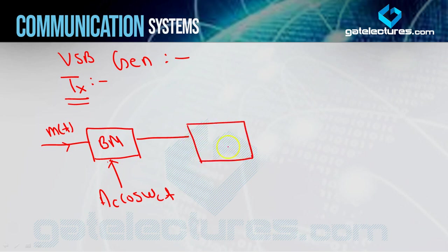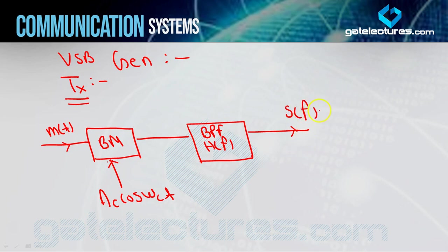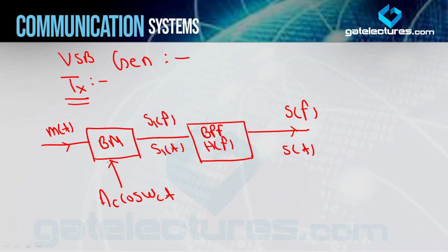Now, hum log kya use karte hain? Phir ek band pass filter, jisski characteristics main le raha hoon yahan par HF. Now, hum log ko generate kya karna hota hai yahan par - SSBSC. Par aap dekhenge ki aapne yahan filter jo hai woh practical liya hai, non-ideal liya hai. Toh aapka jo output hoga woh hoga aapka VSB. Aap show kar sakte hain SF se ya ST se - time domain mein bhi show kar sakte hain, frequency domain mein bhi show kar sakte hain. Same, yahan par agar main balance modulator ke output ko - jo ki DSBSC hoga - main yahan par S1F se show kar deta hoon, ya aap S1T se bhi show kar sakte hain.